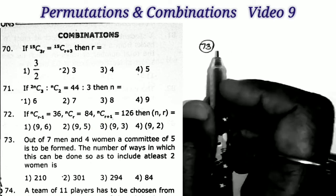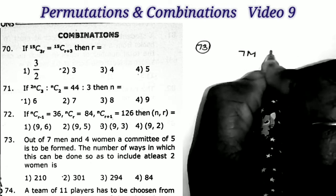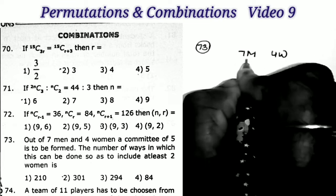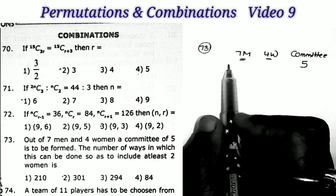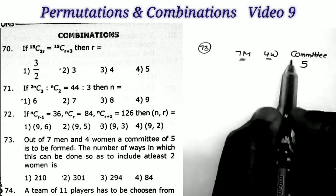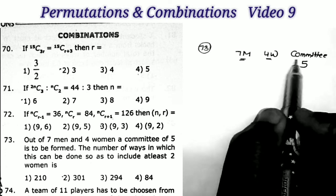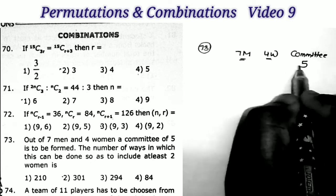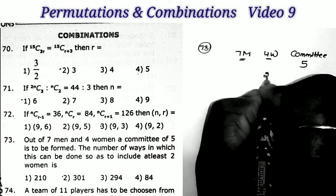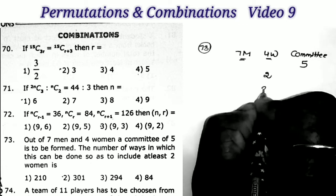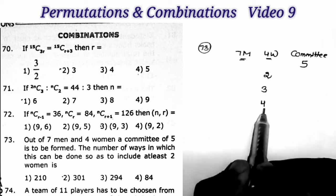Next problem, number 73: out of 7 men and 4 women, a committee of 5 members is to be formed. The condition is at least 2 women must be included. So women may be either 2, 3, or 4. We take either 2 women (and 3 men), or 3 women (and 2 men), or 4 women (and 1 man).